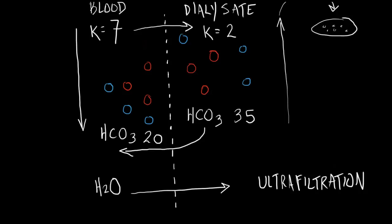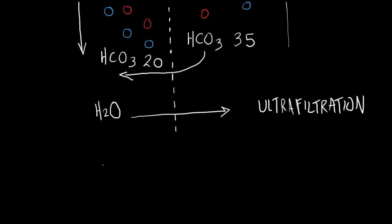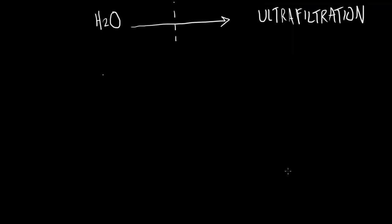So the things that we care about and the things that we change in dialysis prescription are the amount of ultrafiltration or UF in liters, one to four liters. We care about the bath or the dialysate.